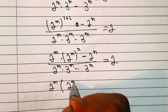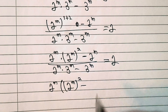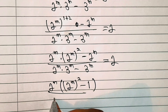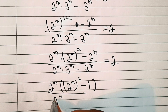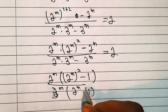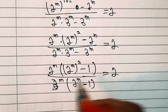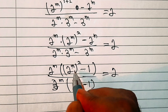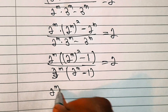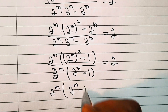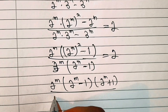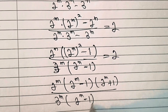Taking 2^m common from the numerator gives (2^m)^2 - 1. In the denominator, 3^m is common, giving 3^m · (2^m - 1). Now (2^m)^2 - 1 is a difference of squares, a² - b² = (a+b)(a-b), so we write it as (2^m - 1)(2^m + 1). This gives us 2^m · (2^m - 1)(2^m + 1), over 3^m · (2^m - 1), equal to 2.